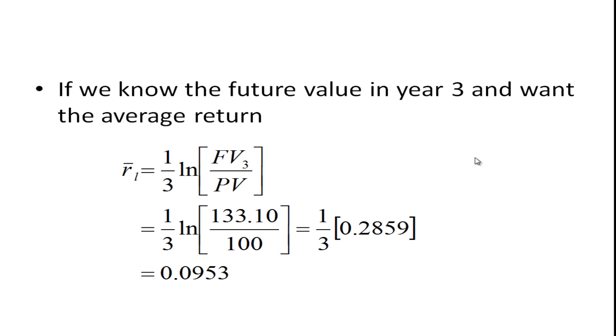Or you could have simply jumped to the final period, 133.10, divided it by the present value and then taken the natural log of that and then divided by 3. So you'll get the natural log of this is 0.2859 divided by 3, you get 0.0953.